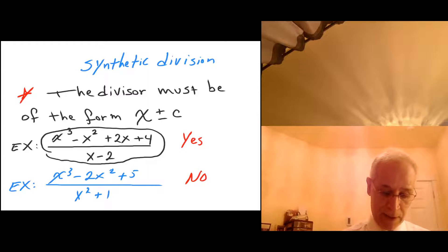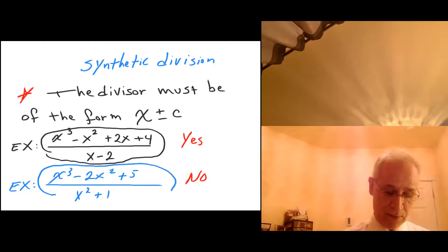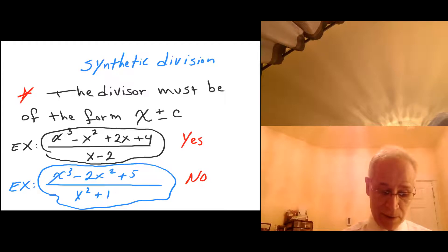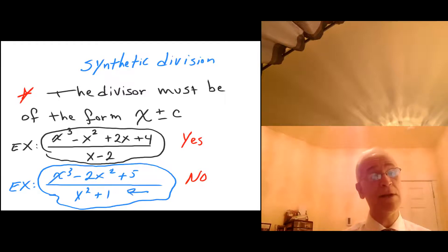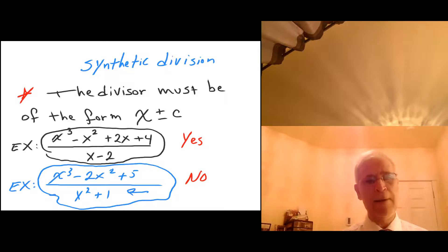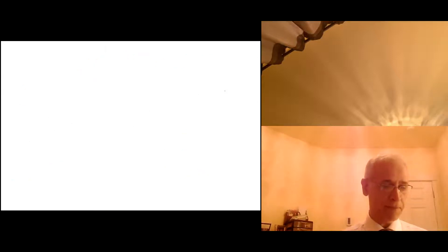How about the second one: x cubed minus 2x plus 5 divided by x squared minus 1 plus 1? No, I cannot use synthetic division because the divisor or the denominator is not of the form x plus or minus a constant. So let me show some examples and hopefully it will be helpful to you.